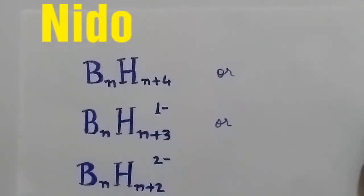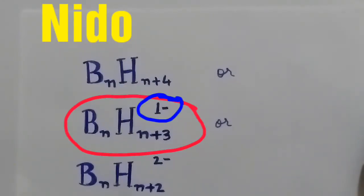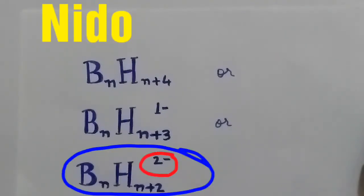In order to check whether the given cluster geometry is nido, you need to consider these three formulas: BnHn+4 or BnHn+3 with a negative charge, or BnHn+2 with 2 negative charge.